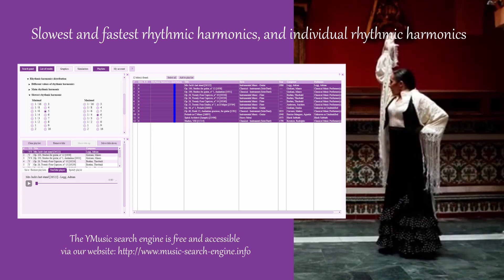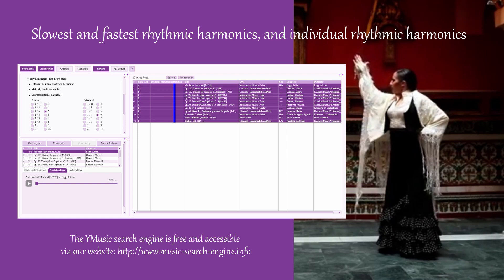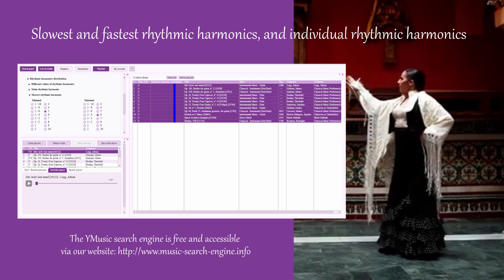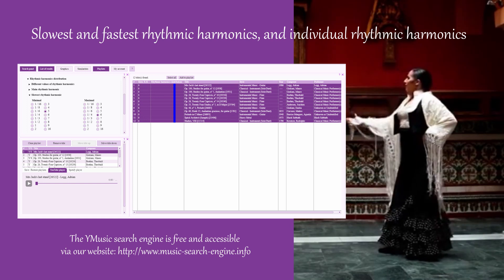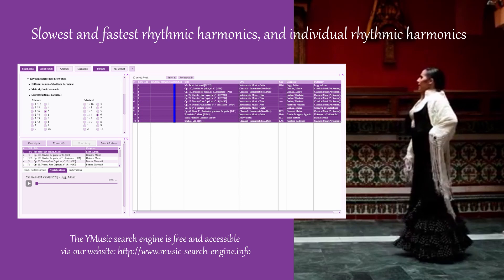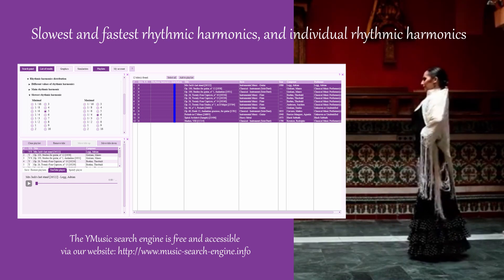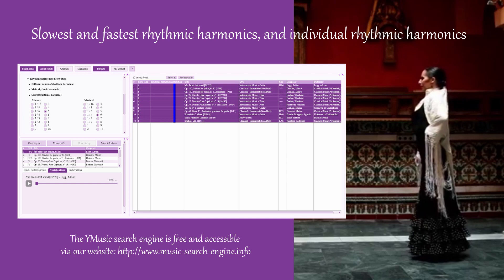In the music search engine, let us open the tab Advanced Music Research Criteria, then Rhythmic Harmonics Distribution, and finally Slowest Rhythmic Harmonic. Let us fix this last parameter, Slowest Rhythmic Harmonic, to a minimum of 5 and a maximum of 6.